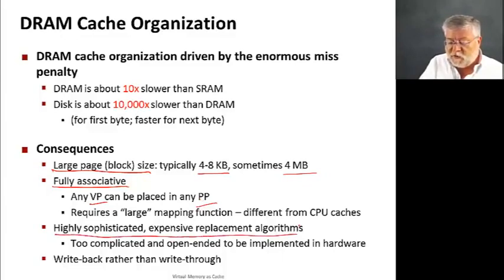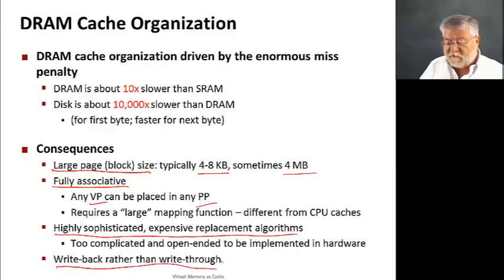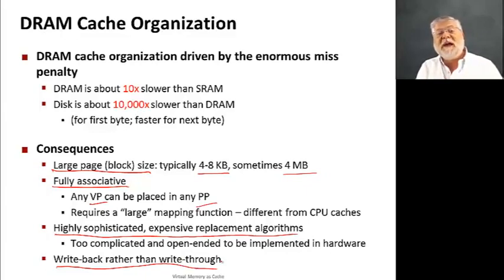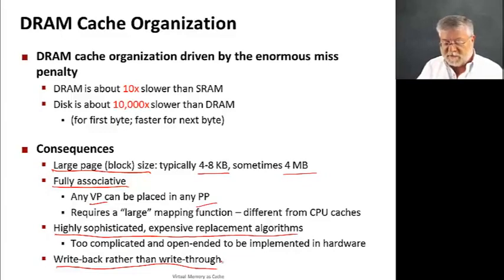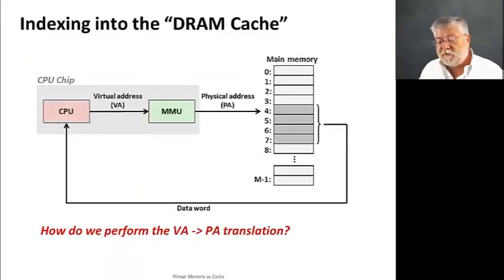We're also going to have the option of much more sophisticated replacement algorithms. Because we can decide where to put any physical page, we can be smarter about keeping the physical pages we're likely to use again. And the last thing is that we're going to use write-back rather than write-through. Because the block size is so large, write-through would be very expensive — every time we write one word we'd have to write the entire block back. So instead we wait until we need to push that block out of main memory, then write back the whole thing.